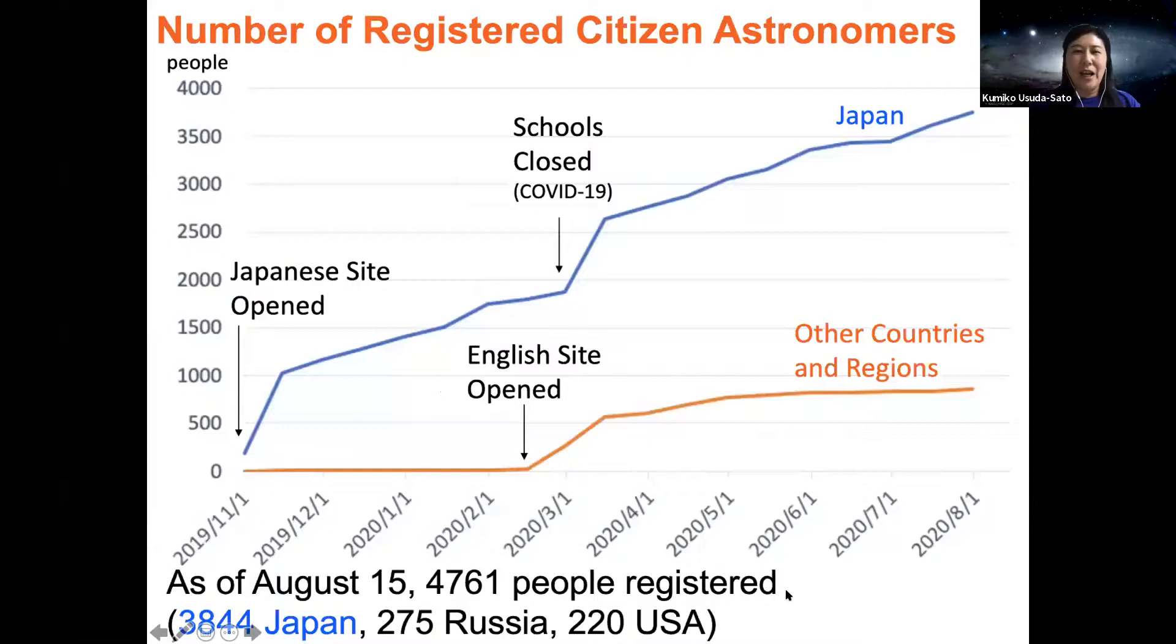I want to share the updates. I have two more minutes. The Japanese site opened on November 1st last year. Within two weeks, there was much web news, and the registered people were more than 1,000. As you know, due to the COVID-19 pandemic, on March 2nd, all Japanese schools were closed. So many young people registered—actually, younger than 20 years. And now the number is still growing.